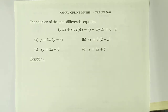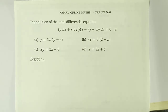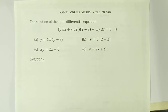Welcome to Komal Online Maths. This is a 2004 PGTR exam question. The question is on the solution of the total differential equation: ydx plus xdy into (2 minus z) plus xy·dz equal to 0. There are 4 options given.